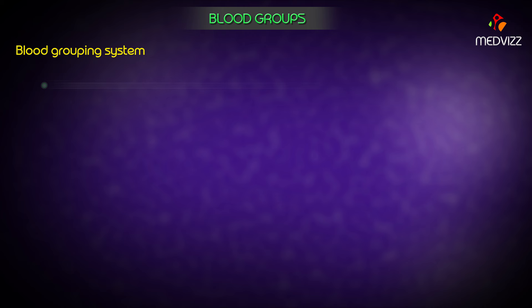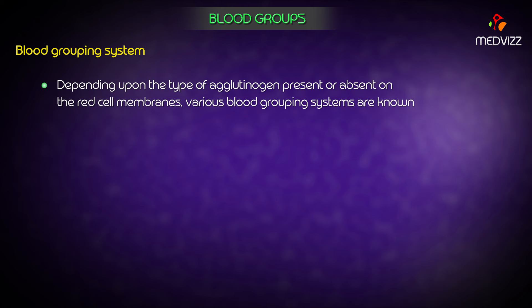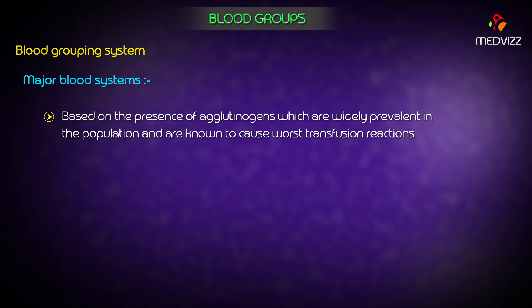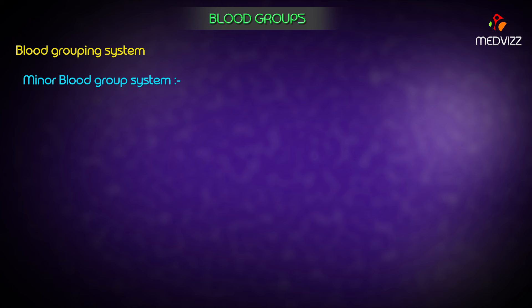Blood grouping systems are classified based on the type of agglutinogen present or absent on the red cell membranes. Major blood group systems are based on agglutinogens widely prevalent in the population and known to cause severe transfusion reactions. These include the classical ABO blood grouping system and the Rh blood grouping system.